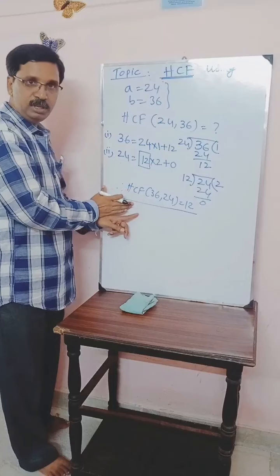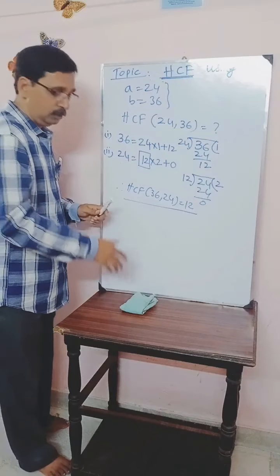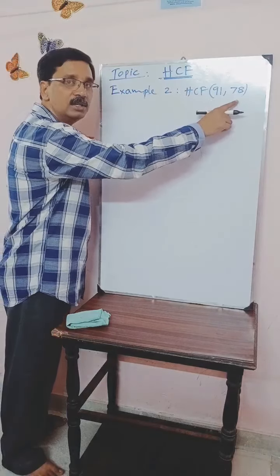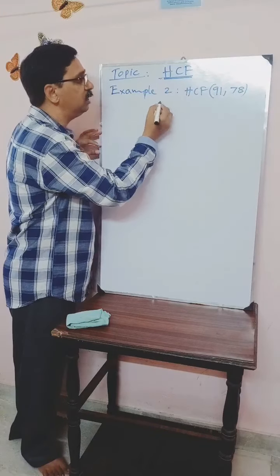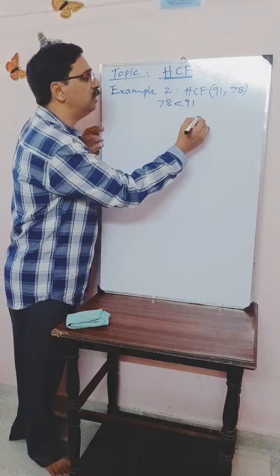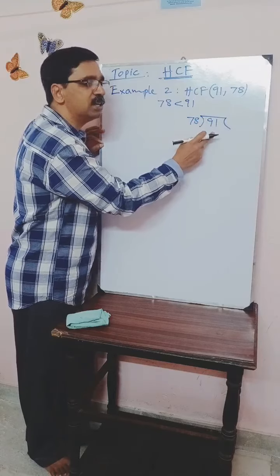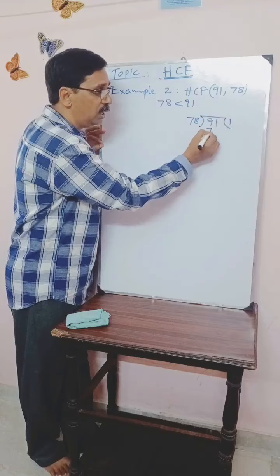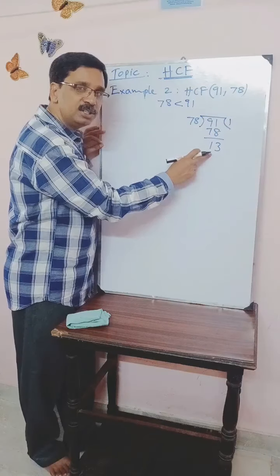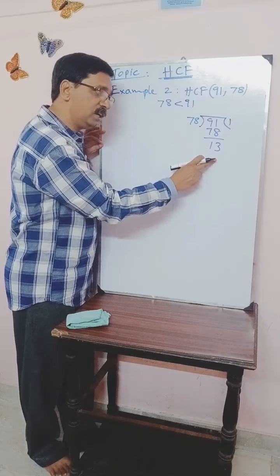We stop the first example here. We can carry out a number of examples like this. Let us take another example — example 2: HCF of 91 and 78. We know 78 is smaller than 91, so we divide 91 by 78. Let us find out the division. 91 divided by 78: only one time you can subtract 78 from 91, giving a remainder of 13. The remainder is not 0, so we continue the division. Divide the divisor by the remainder 13.